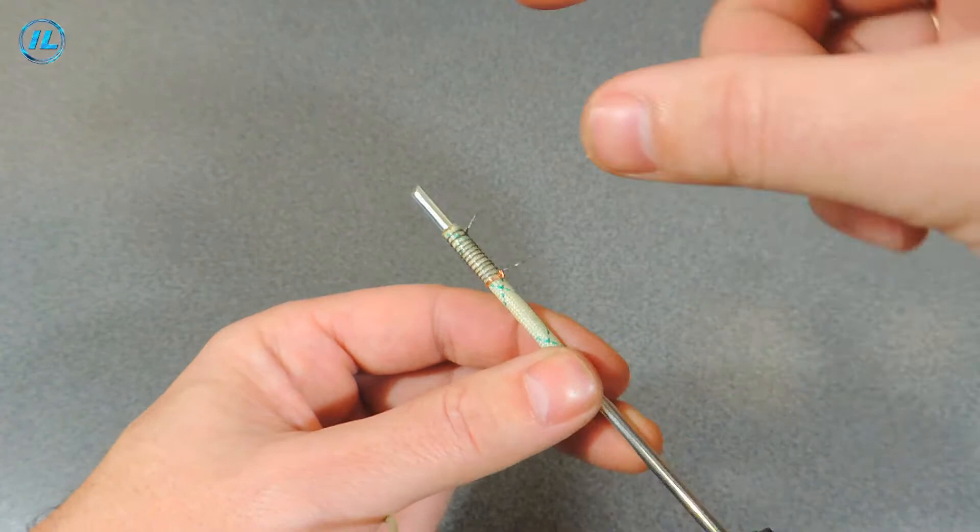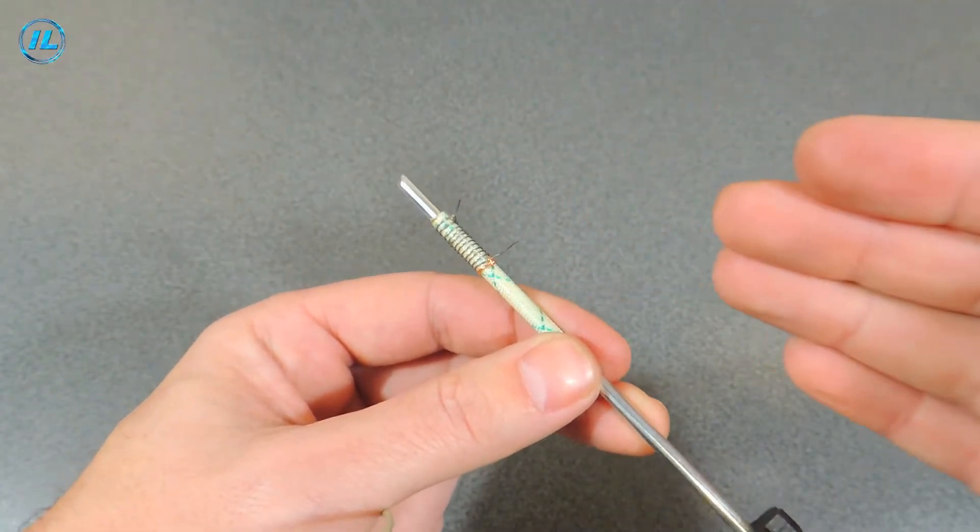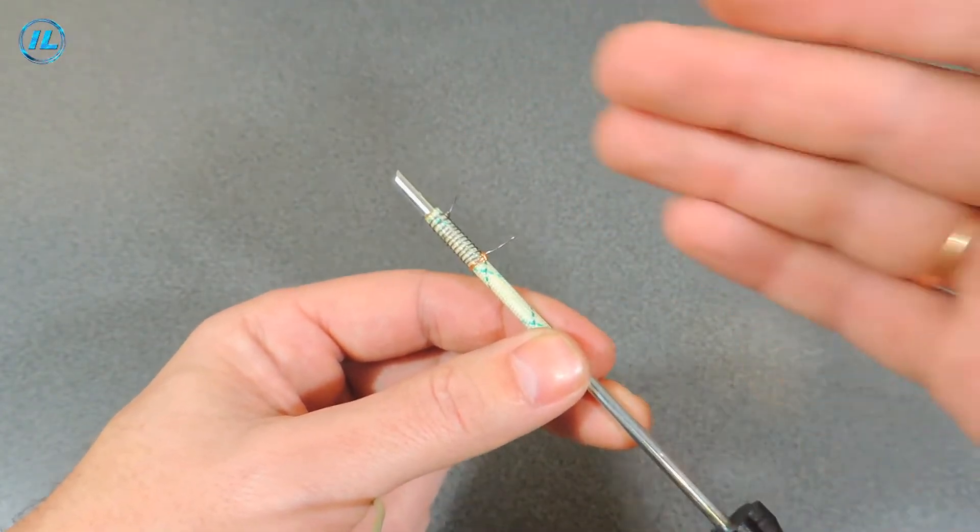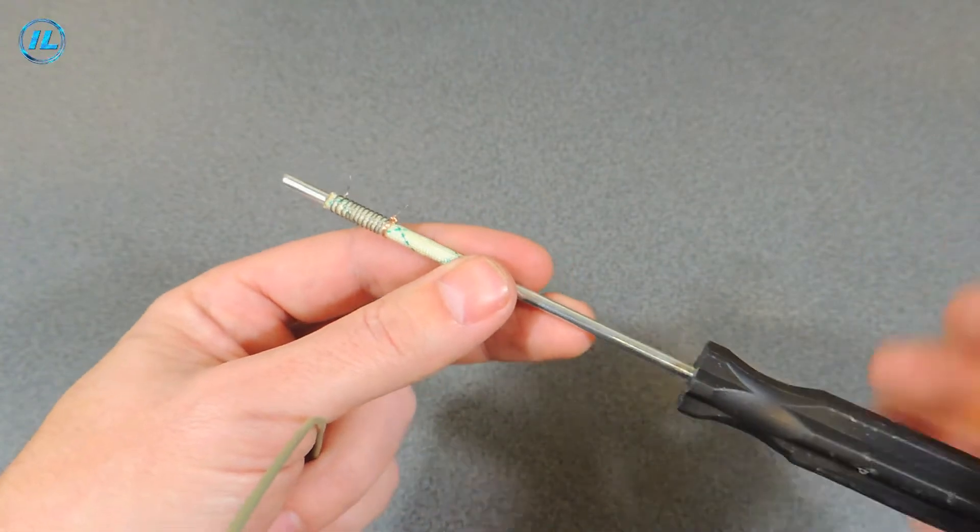Well, the most important part of the soldering iron is ready. It remains only to connect it to the charger from the phone.